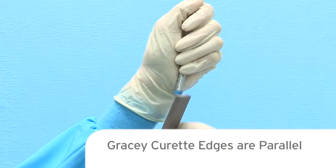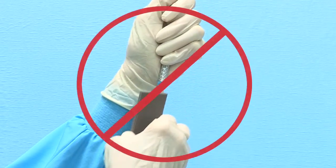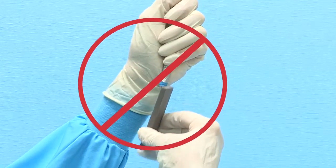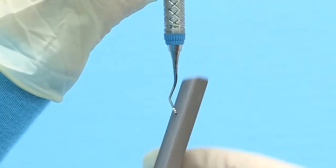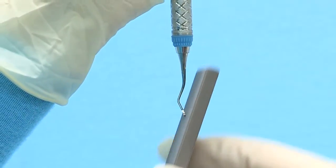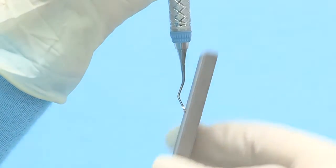It is important to remember that the blade of the Gracey curette is straight and not curved. When sharpening, do not rotate the stone as you move from the heel to the toe of the blade. Instead, sharpen the blade of the Gracey curette while proceeding in a straight line from heel to toe, as this will preserve the original blade design.